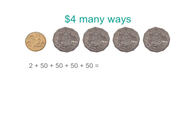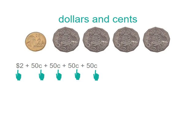Let's look at this one though, because if we were adding up this to see whether it was in fact four dollars, we're going to look at adding two plus fifty plus fifty plus fifty plus fifty. Can you see what might be going wrong here? Well, one of those is a two-dollar value and the others are all fifty cents.